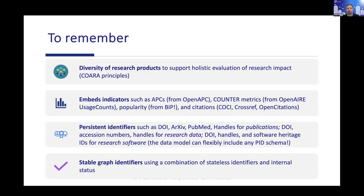We embed indicators where available: usage counts such as downloads and views from connected data sources, citation counts, and also APC — article processing charges — at the level of the persistent identifier and DOIs. We rely on persistent identifiers but also include objects that do not have them, since researchers typically use national or institutional repositories which may not rely on persistent identifier agencies. The whole graph is built producing stable graph identifiers useful for downstream applications.